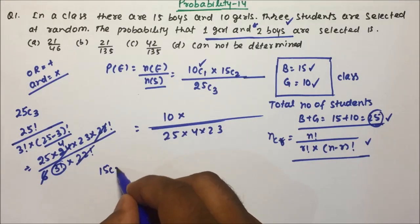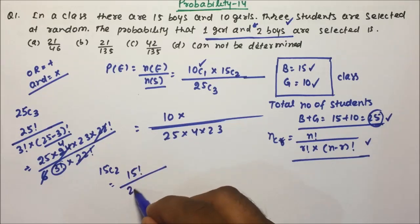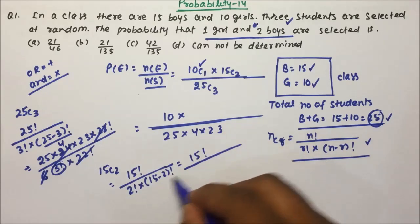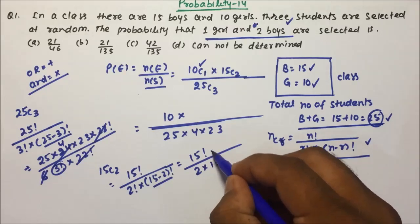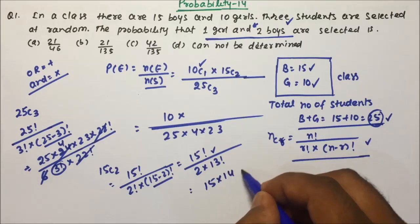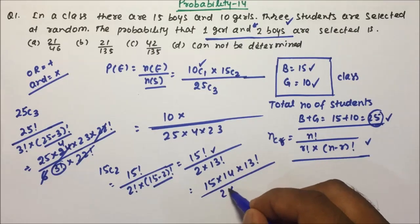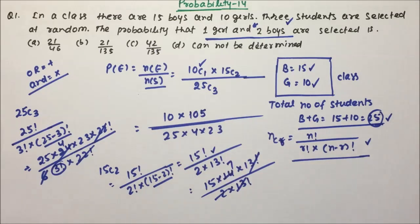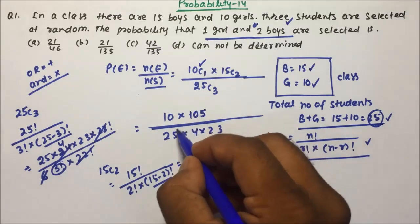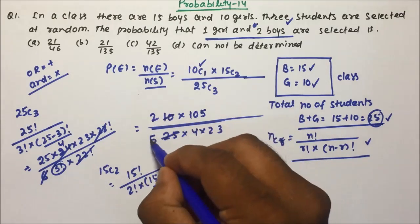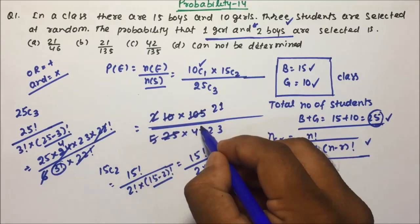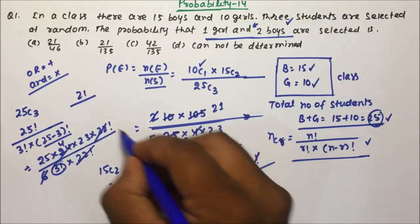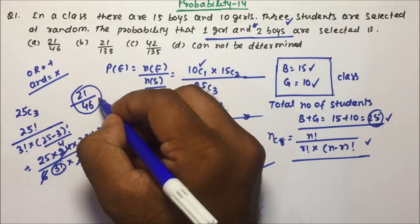15C2: if we calculate, it will be 15 factorial divided by 2 factorial into 13 factorial. Expanding: 15 into 14 into 13 factorial, divided by 2 into 13 factorial. The 13 factorial cancels, giving 15 into 7 which is 105. Now simplifying the overall expression: cancelling common factors, we get 21 divided by 2 into 23, which is 46. So 21 divided by 46 will be the answer.